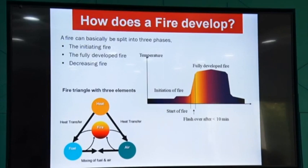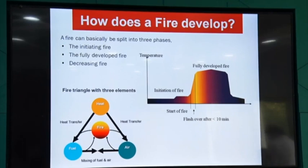How does a fire develop? It is a very simple thing. First of all, there should be initiation of fire — you just start that fire, it is called fire initiation. Secondly, there will be a fully developed fire, which you can see on a graph. And last is a decreasing fire — it will go down. These are the three stages you will see whenever there is a fire accident anywhere.